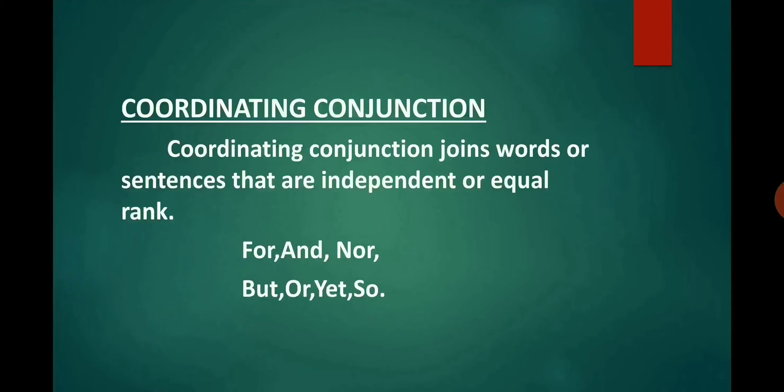First, we discuss coordinating conjunctions. A coordinating conjunction joins words or sentences that are independent or of equal rank. The coordinating conjunctions in English are: for, and, nor, but, or, yet, so. They can connect a word to another word, phrase to phrase, and clause to clause.